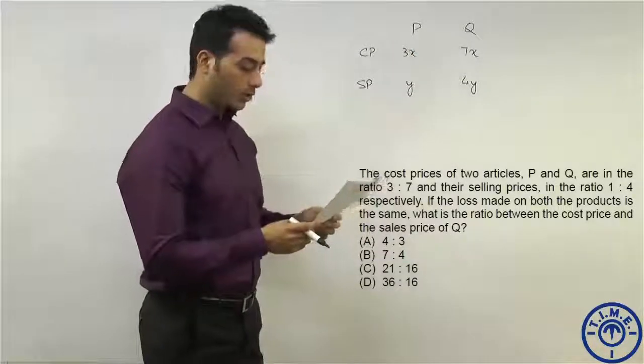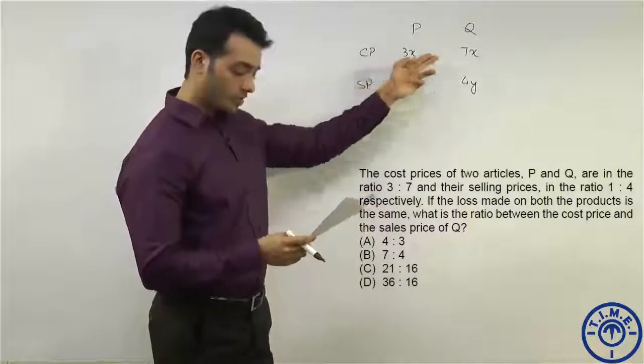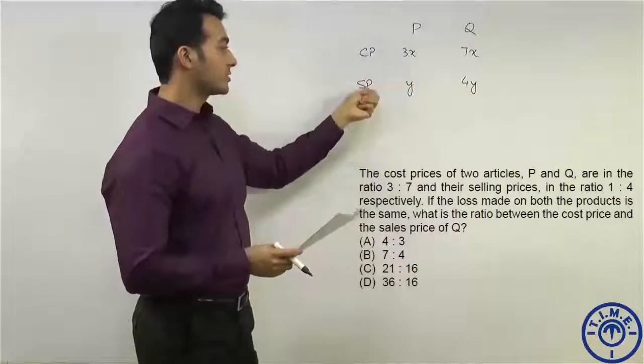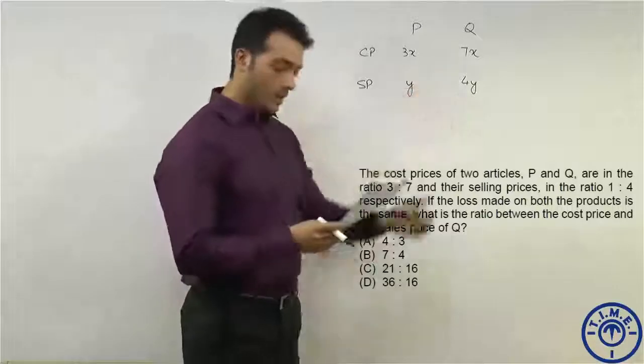Here we have two articles P and Q whose cost prices are in the ratio 3:7. We will take the cost price as 3x and 7x, and likewise as given, we will take the selling price to be y and 4y.